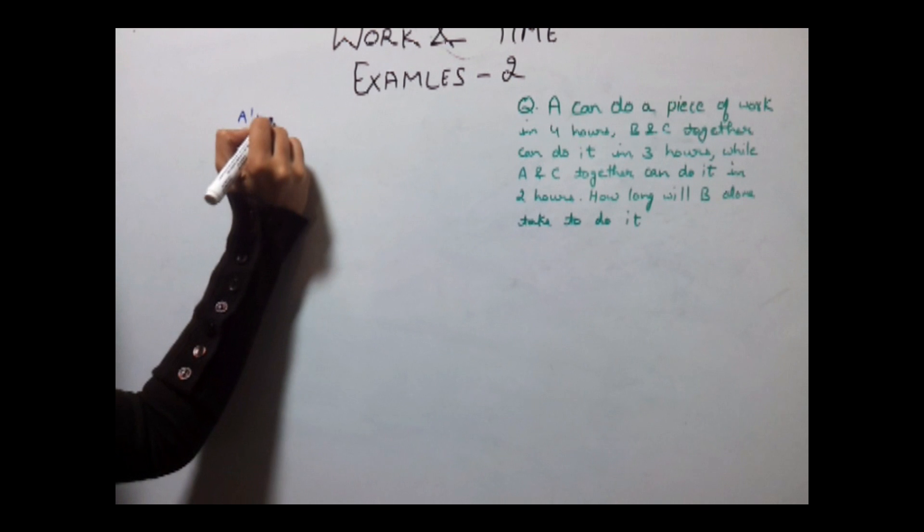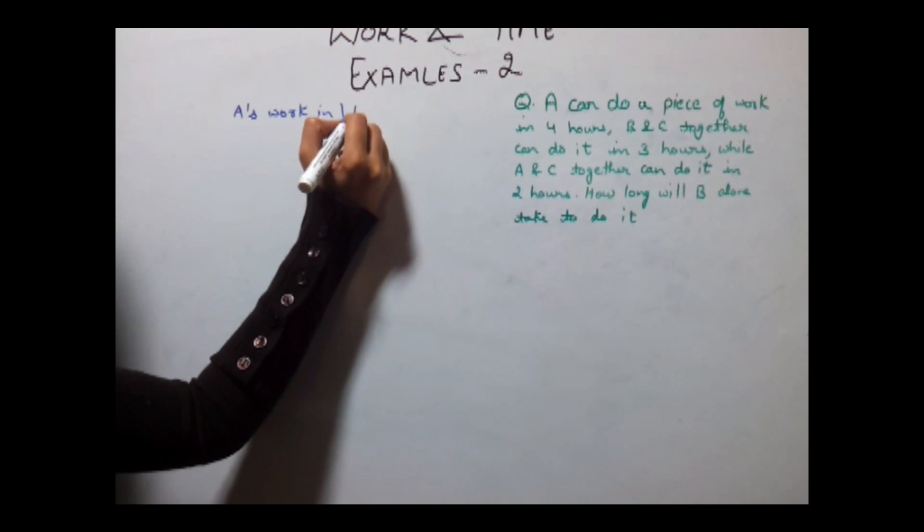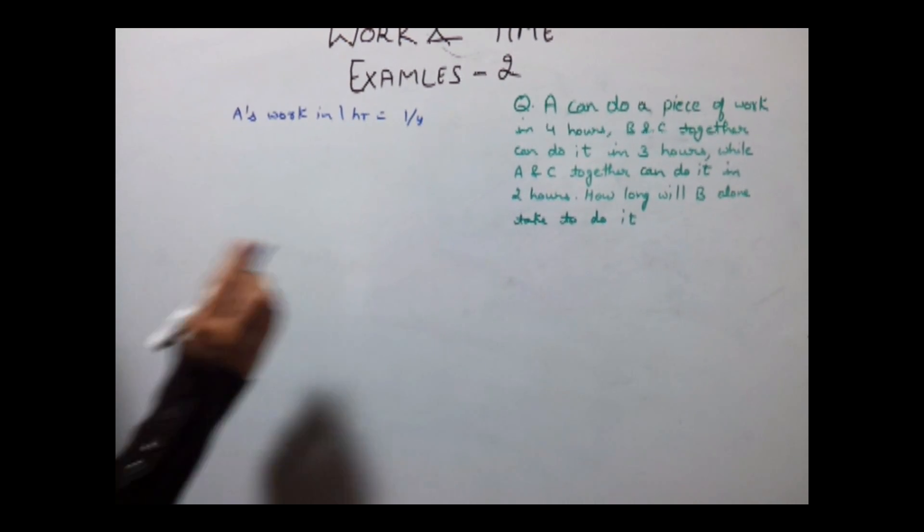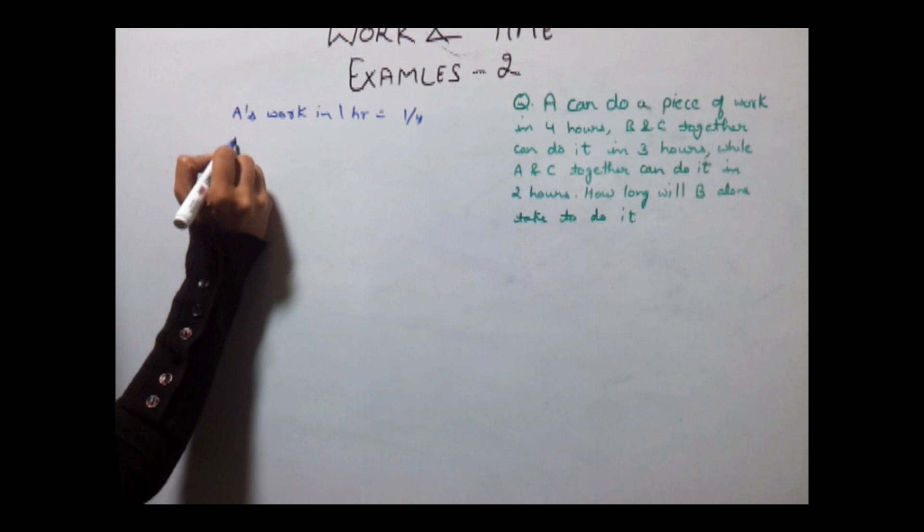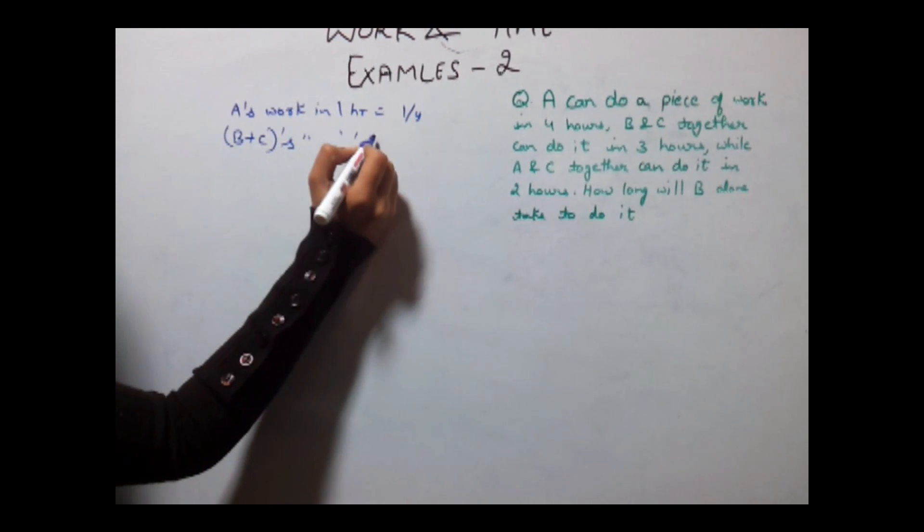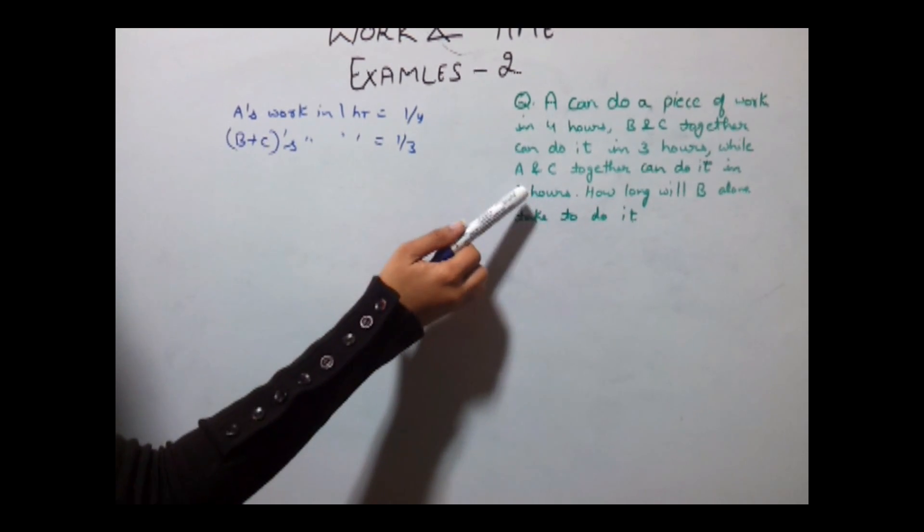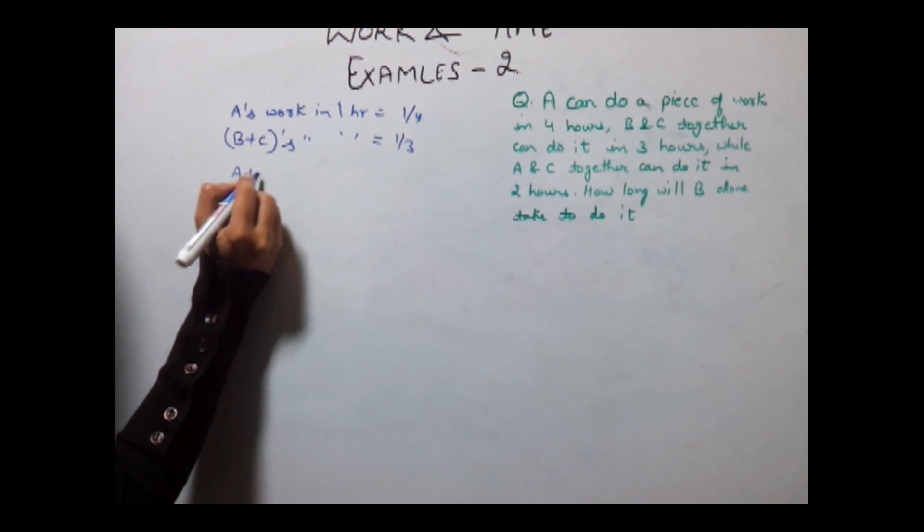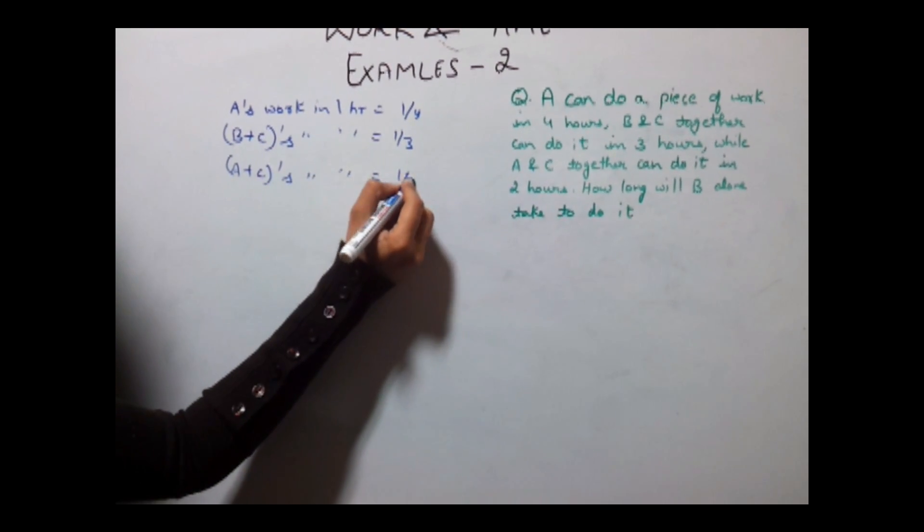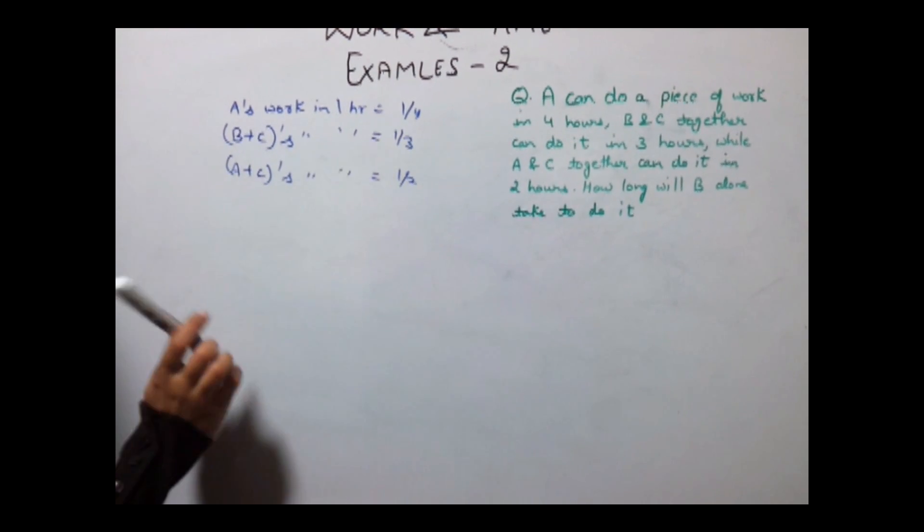A can do total piece of work in 4 hours. So A's work in 1 hour is equal to 1/4. Similarly B and C can do it in 3 hours. So B plus C's work in 1 hour is equal to 1/3. And A and C can do it in 2 hours. So A plus C's work in 1 hour is equal to 1/2. We need to find out how long will B take to do the work.